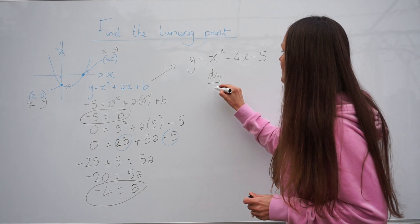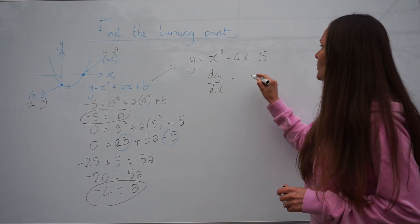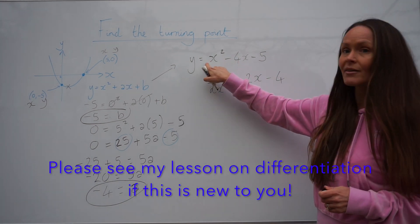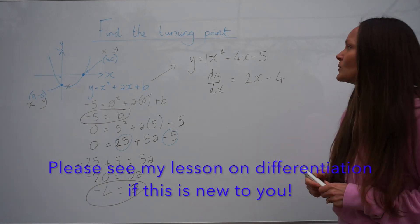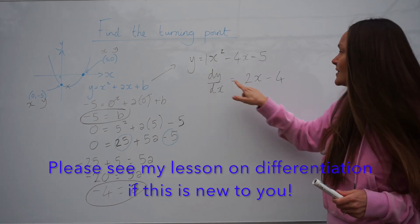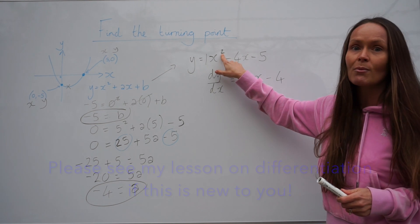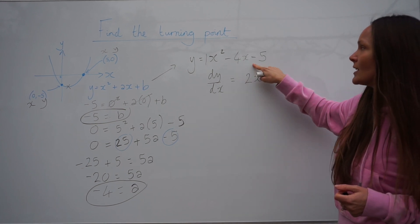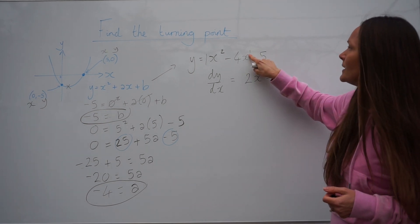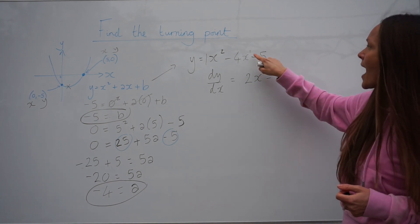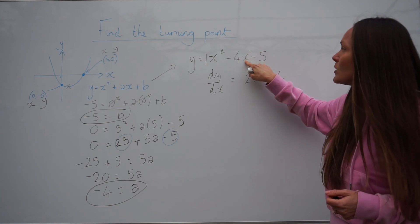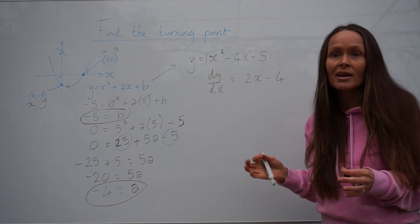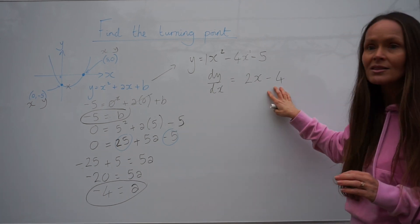When we work out the derivative, dy/dx, of this equation, we get 2x minus 4. Remember, you need to multiply the power by the number directly in front of x — in this case there's a 1, we just don't normally write 1x. So 2 multiplied by 1 is 2, and the power decreases by 1. When we differentiate minus 4x, the power 1 multiplied by negative 4 gives negative 4, and when the power decreases by 1 you get 0, and since x to the power of 0 is 1, you're left with just negative 4. When you differentiate a constant, it disappears. So this is our expression for the gradient: 2x minus 4.